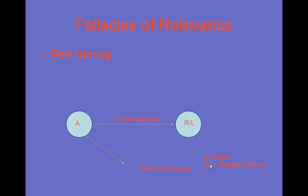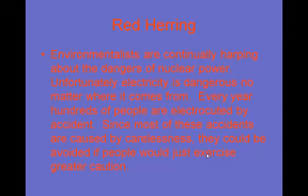A fallacy of relevance called red herring is when an arguer draws the listener off track, changes the subject, and poses a conclusion. Example: 'Environmentalists are continually harping about the dangers of nuclear power. Unfortunately, electricity is dangerous no matter where it comes from. Every year hundreds of people are electrocuted by accident. Since most of these accidents are caused by carelessness, they could be avoided if people would just exercise greater caution.' Notice the change of subject — from nuclear power to electricity in general. This is the informal fallacy of red herring.